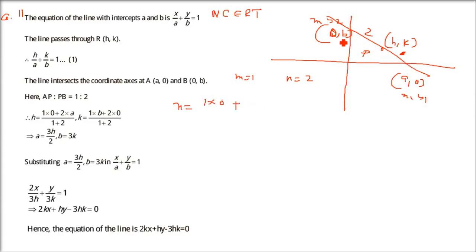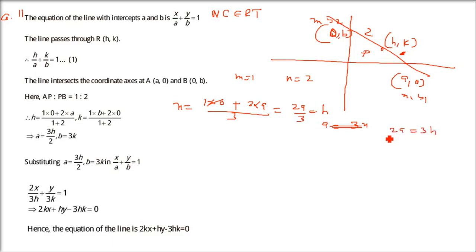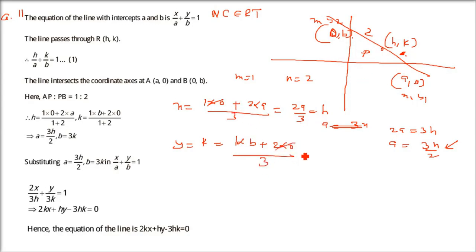Always start from the x-axis: m = 1, n = 2. Taking (a, 0) as (x₁, y₁) and (0, b) as (x₂, y₂), using section formula: x = (1×0 + 2×a) / 3 = 2a/3. So a = 3x/2, and since x = h, we get a = 3h/2. Similarly for y: k = (1×b + 2×0) / 3 = b/3, so b = 3k.